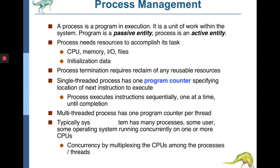Moving to process management — the operating system is a resource manager responsible for managing the underlying hardware efficiently to run applications, including system programs and user-defined programs. A program is a passive entity that cannot do anything if not allocated to the CPU. Whenever a program is allocated to the CPU and starts execution, it becomes a process. A program under execution is called a process and is an active entity, whereas a program is a passive entity.